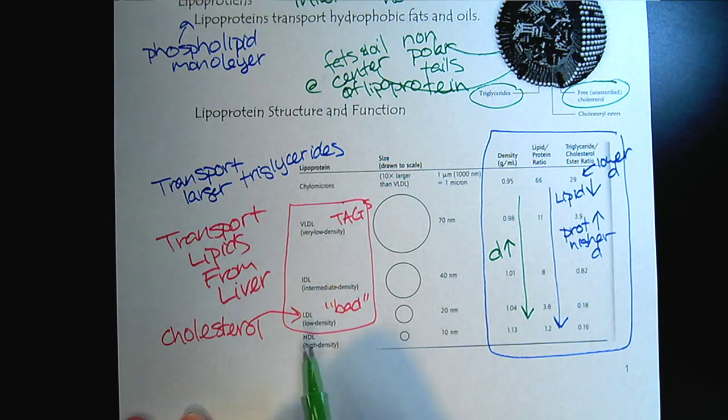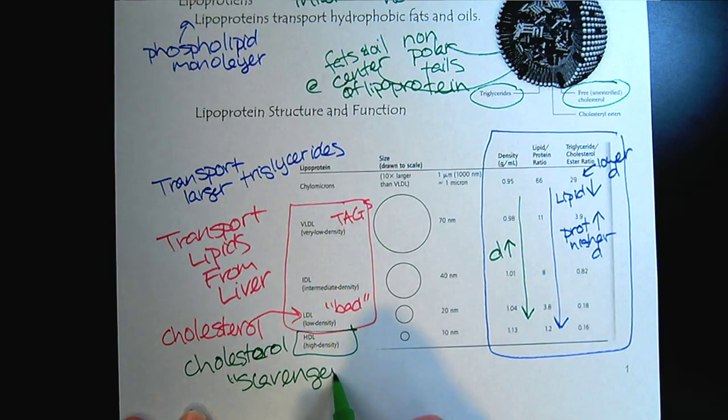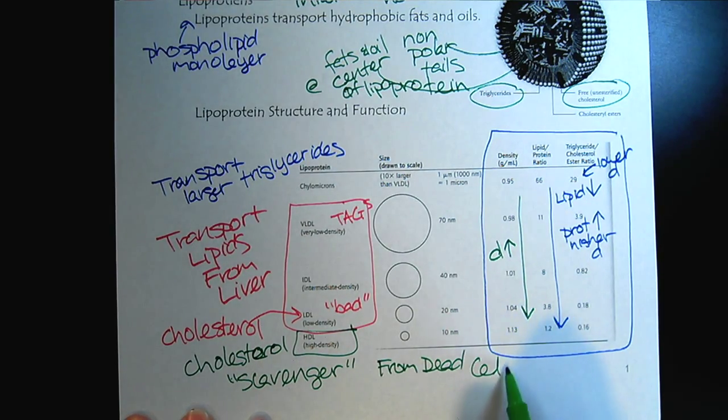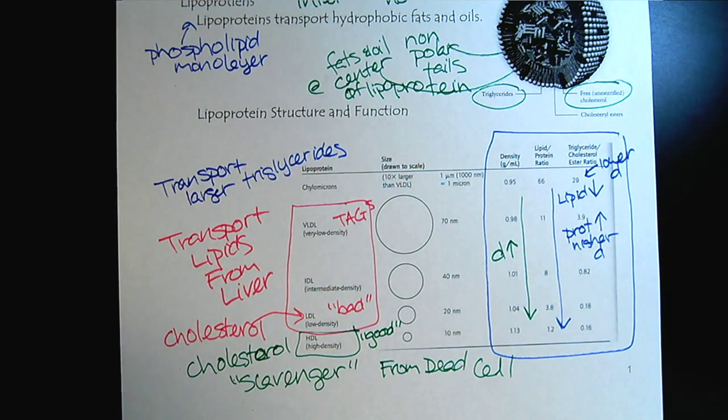And then the HDL is also responsible for cholesterol transport. However, it is the scavenger. So the HDL, it's the one that's transporting cholesterol from dead cells. So it's considered the good cholesterol because it's out there taking care of our blood and keeping everything clean and picking up any old cholesterol that's not needed from dead cells.